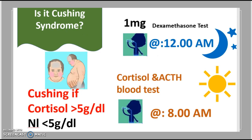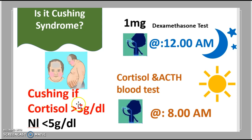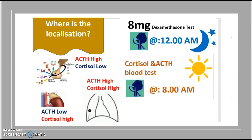To find out if a patient has Cushing syndrome, there are two tests. First, give a 1 milligram dexamethasone test at 12 a.m. Then, at 8 a.m. the next morning, check cortisol and ACTH blood levels. If cortisol is greater than 5 micrograms per deciliter — which is abnormal — then you are dealing with Cushing syndrome. If it is 5 or less, you are not.